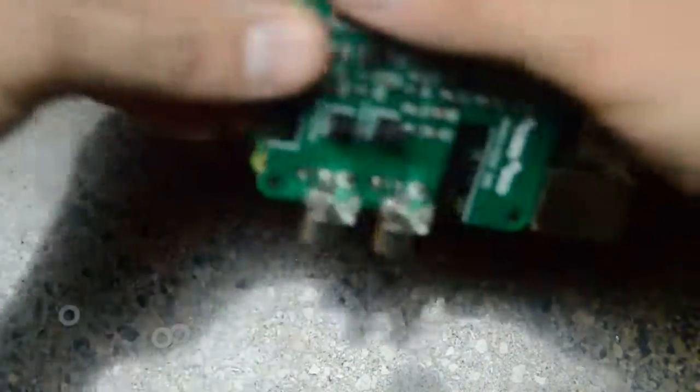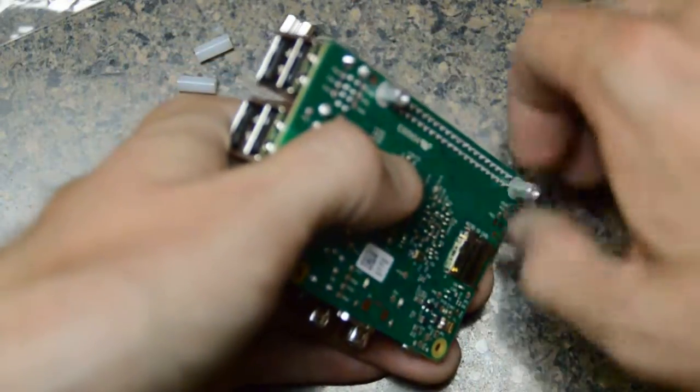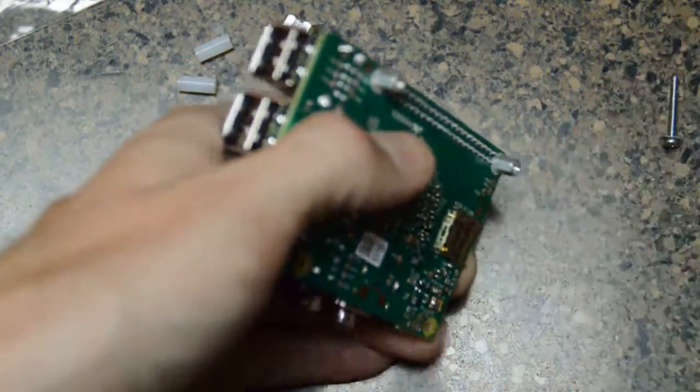Same thing: screw with the washer goes through the standoff, and I'm going to put a washer on the backside like so, and finally screw in the two and a half metric, two and a half thread.